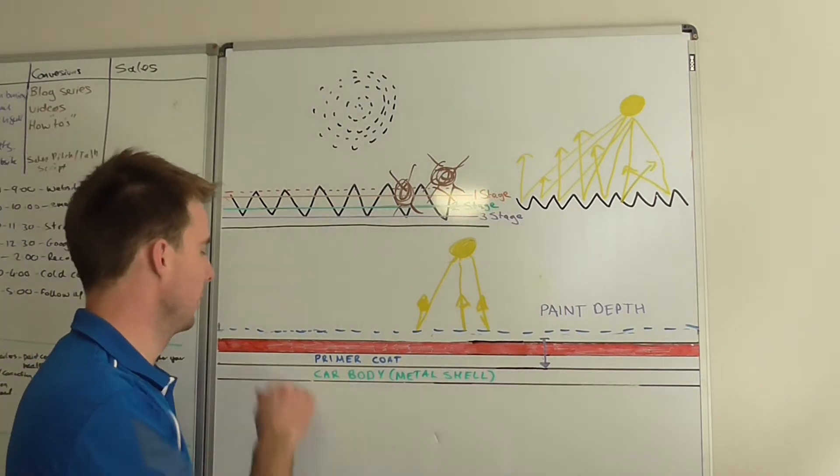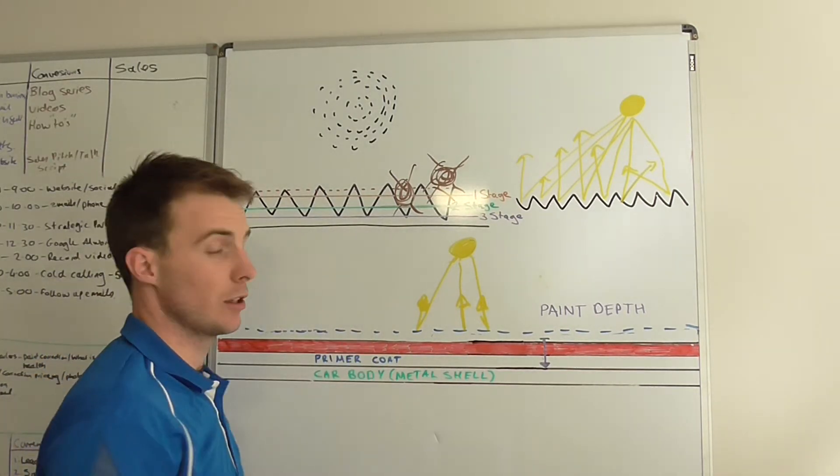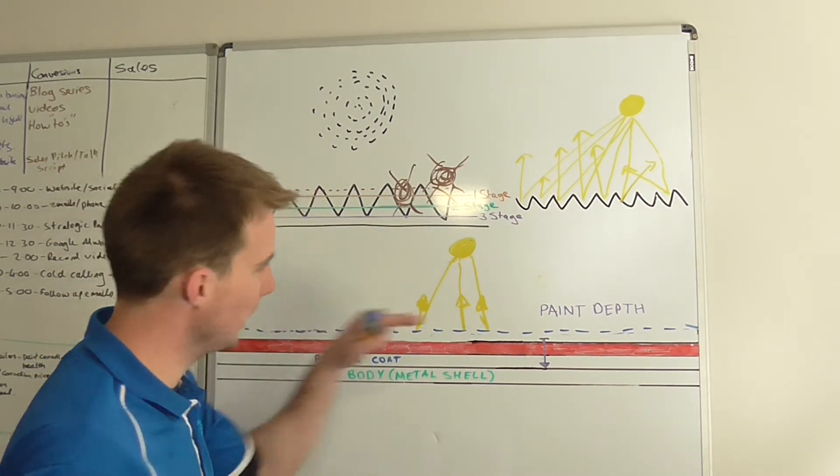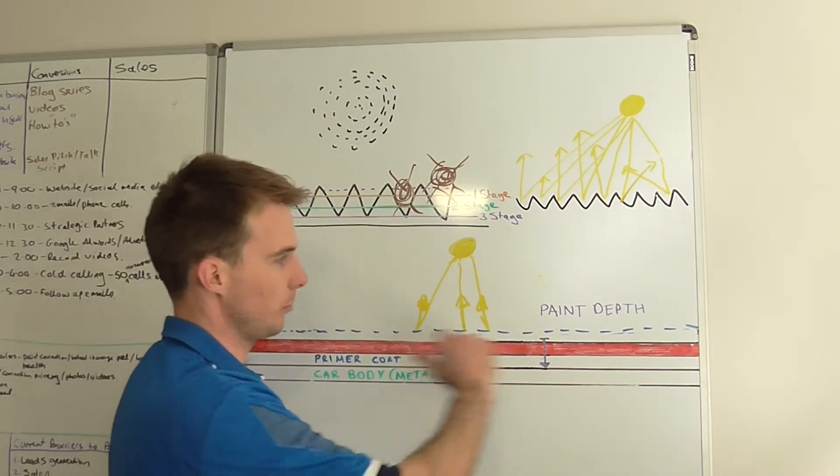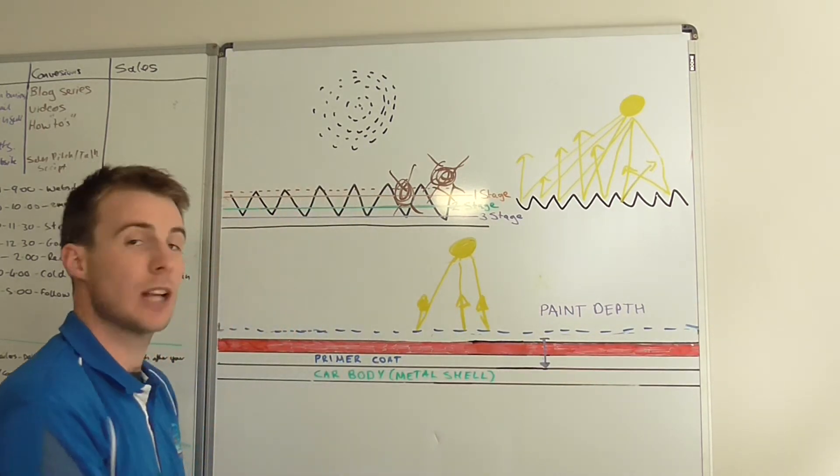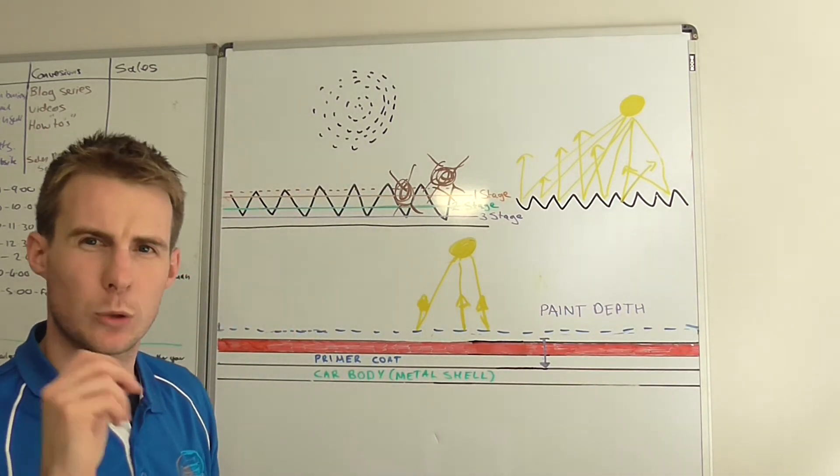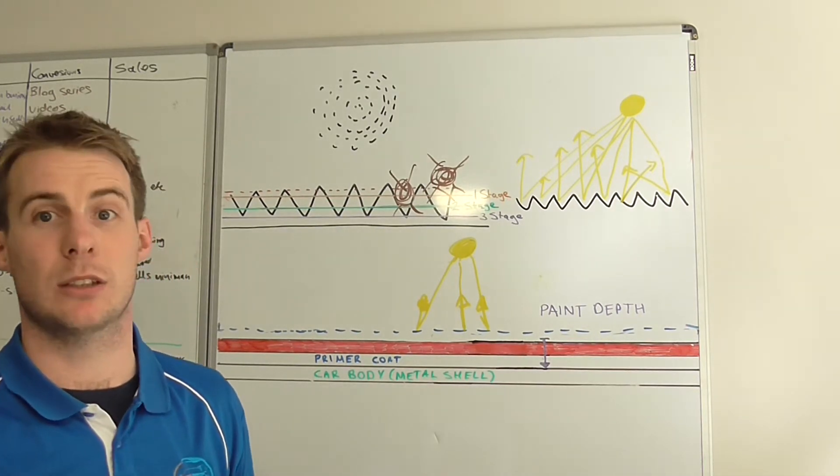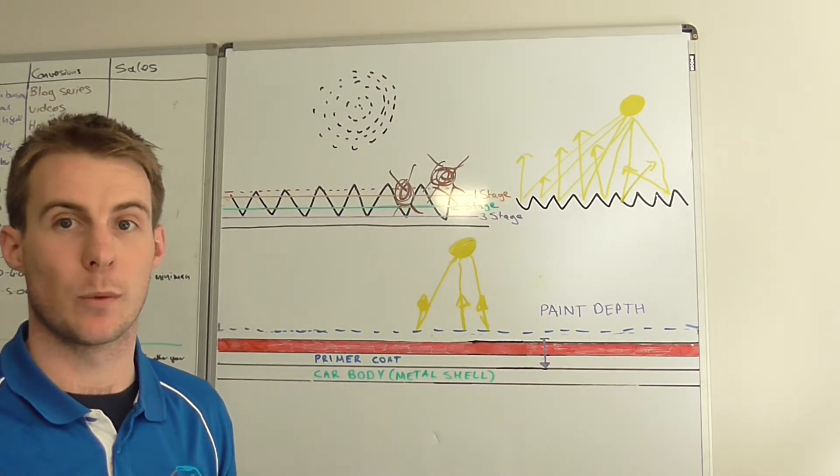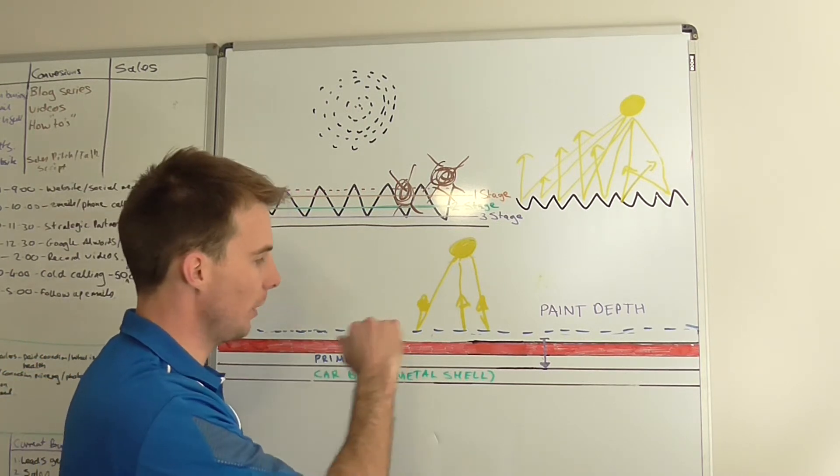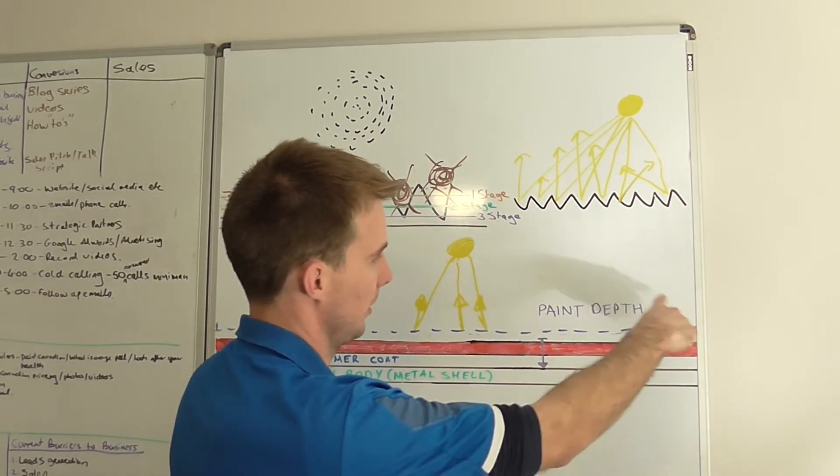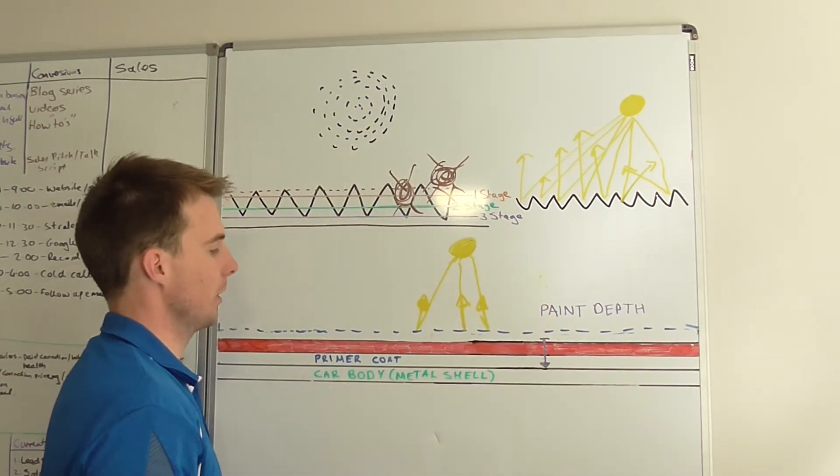So the process is sanding it down using certain grains of sandpaper, or sandpaper for the car. Sanding the clear coat down to get this perfectly flat level, and that is how you get, pretty much how you get, people talk about a mirror reflection. So that's pretty much one of the best ways to actually get that in your paintwork. Basically, you're sanding down the peaks, bring that down, flat level.